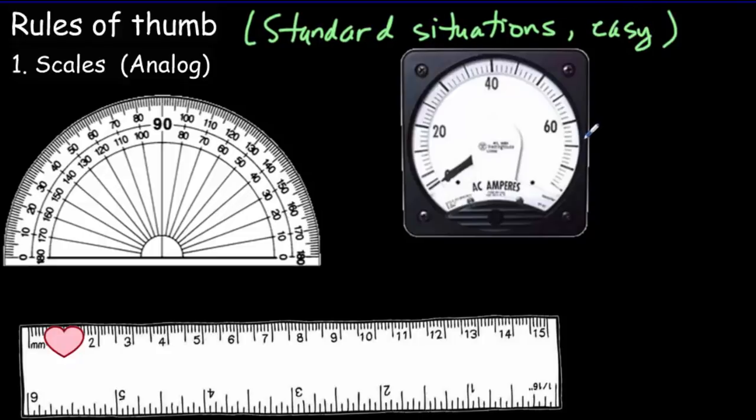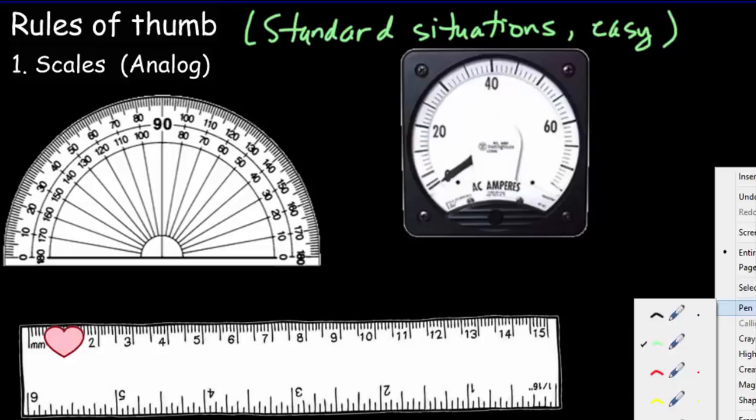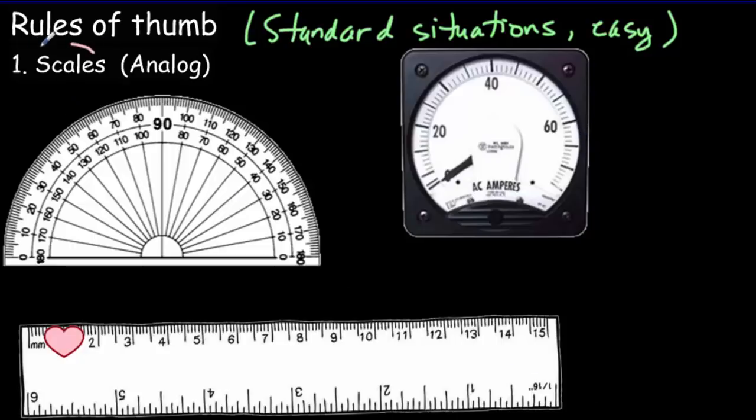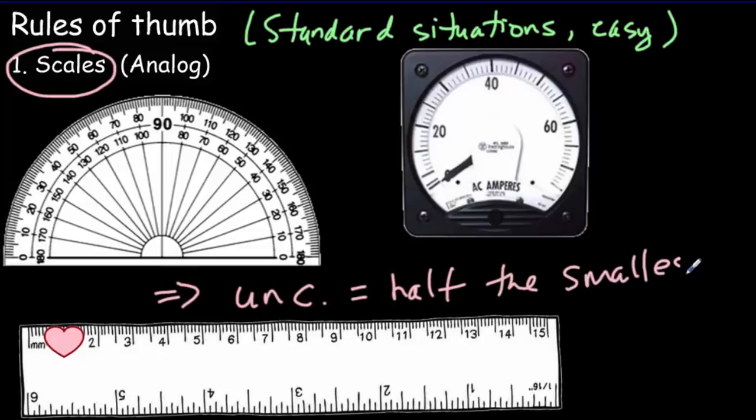There aren't any real complications to the measurement. So we have a rule where we're using scales. A scaled thermometer, a protractor, an analog meter, a meter stick, etc. And our very simple rule is simply that the uncertainty will be equal to half the smallest scale division.